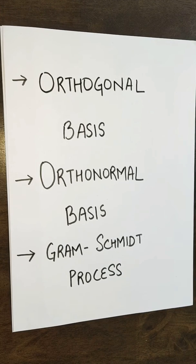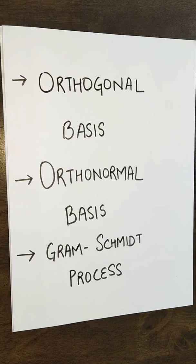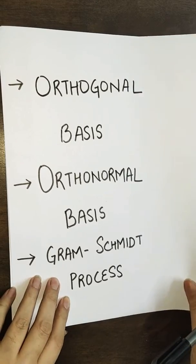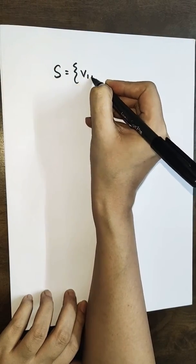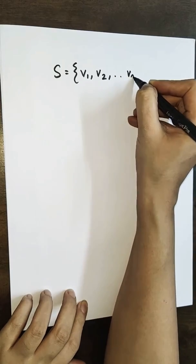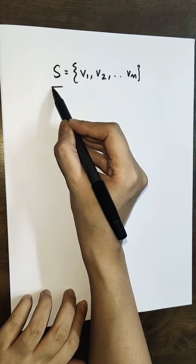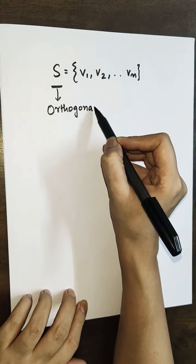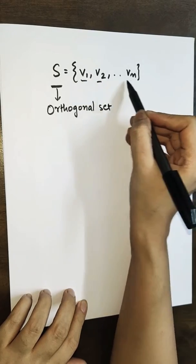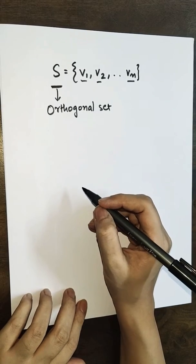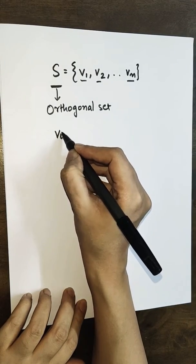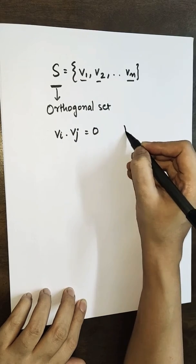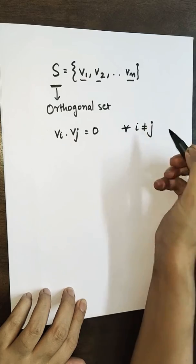Hi friends, today I'll be telling you about orthogonal basis, orthonormal basis, and the Gram-Schmidt process. So what is an orthogonal set? Suppose we have a set S that contains vectors v1, v2, ..., vn. This set S is said to be an orthogonal set if all of the vectors of S are mutually perpendicular to each other. That means vi dot vj equals 0 for every i not equal to j.